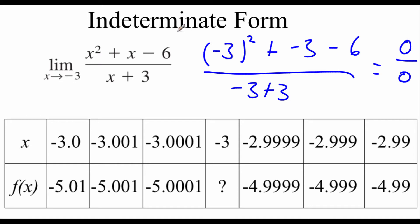When we have this indeterminate form, we can't figure out what the limit is at that specific x value directly. Now indeterminate form does not mean that the limit doesn't exist — we can still have a limit. If we look at the table, as we approach negative 3 from the left and the right, we can see we're getting really close to negative 5, but we're not seeing that from the indeterminate form fraction.